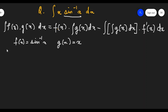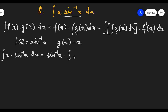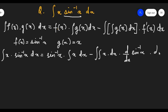Now let us put them in the formula. Integration of x times sine inverse of x equals f(x), which is sine inverse of x, times integration of x dx, minus integration of [integration of x dx] times differentiation of f(x), that is d/dx of sine inverse x, and dx.